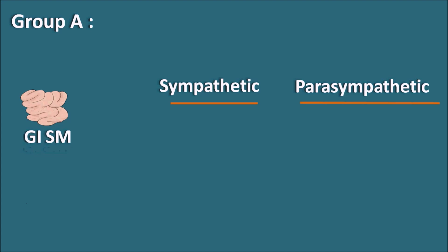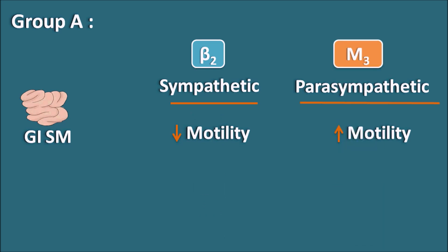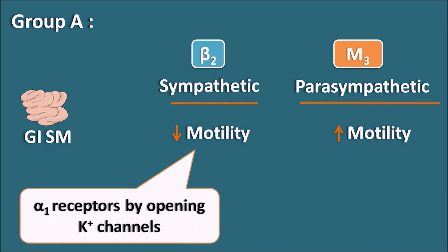The third type of organ is the GI smooth muscle. At the GI smooth muscle, the sympathetic system decreases the motility and the parasympathetic system increases the motility. The receptors involved are beta 2 receptors of the sympathetic system and M3 receptors of the parasympathetic system. Beta 2 receptors always produce relaxation, thereby motility is decreased, and parasympathetic system works by M3 receptors, which always produce contraction, resulting in increased motility.